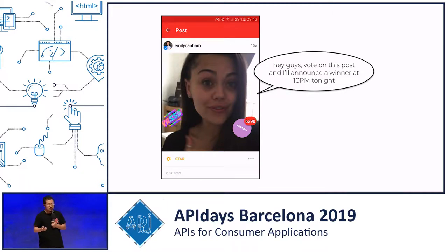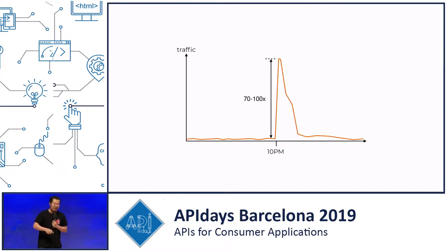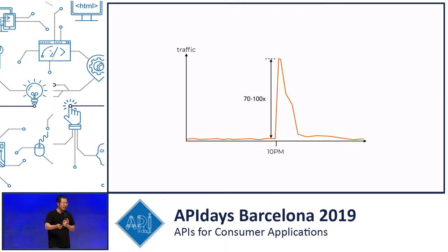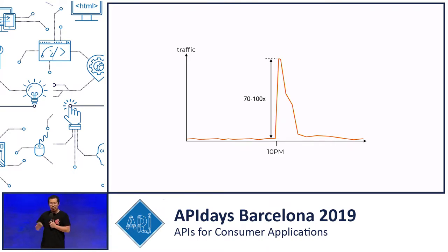As you can imagine, throughout the day our traffic is nice and stable and very low, and then at exactly 10 o'clock we get this massive spike in traffic because everybody comes in to see whether or not they've won Emily's designer handbag. This makes the job as a backend engineer really difficult in terms of how to provision a cluster to cater for all these unpredictable spikes — sometimes 70 to 100x of normal traffic.